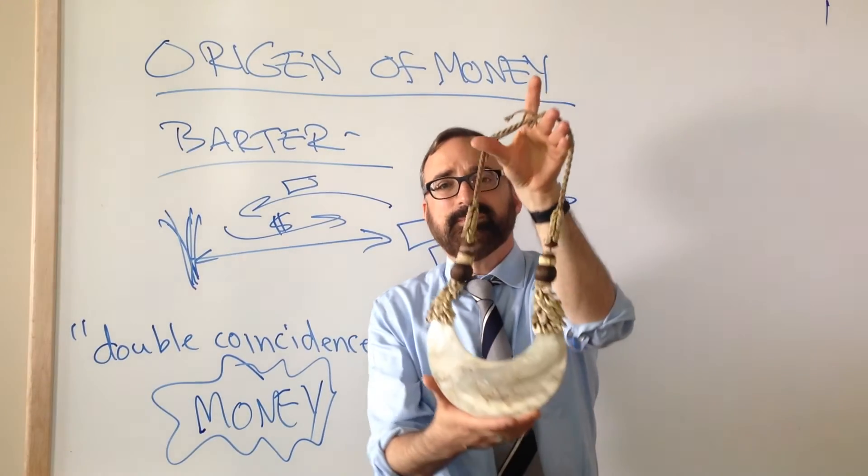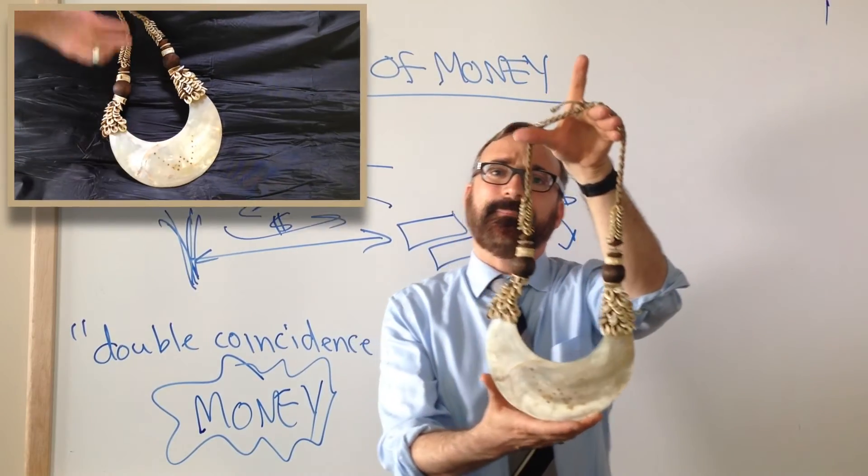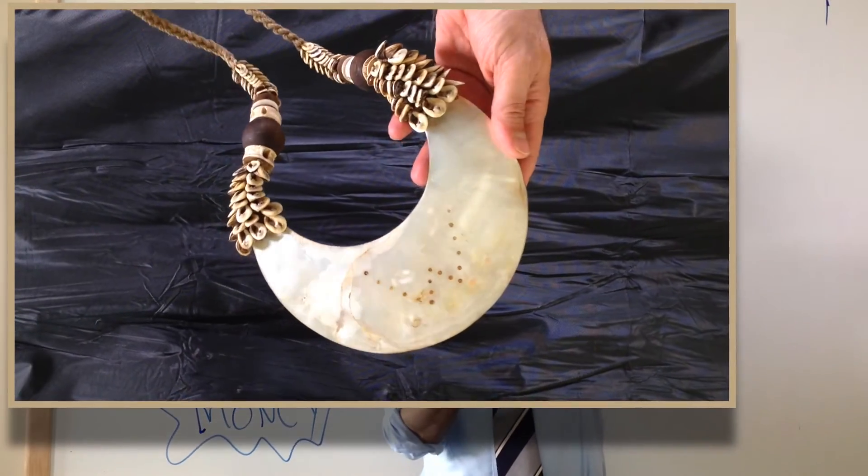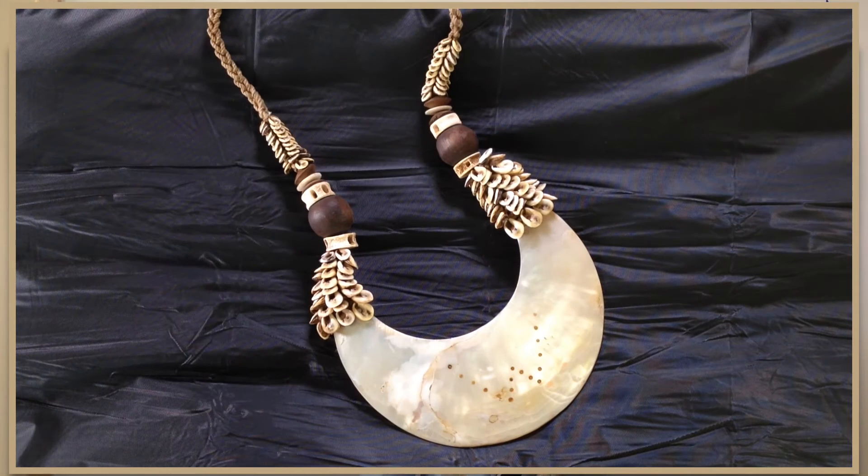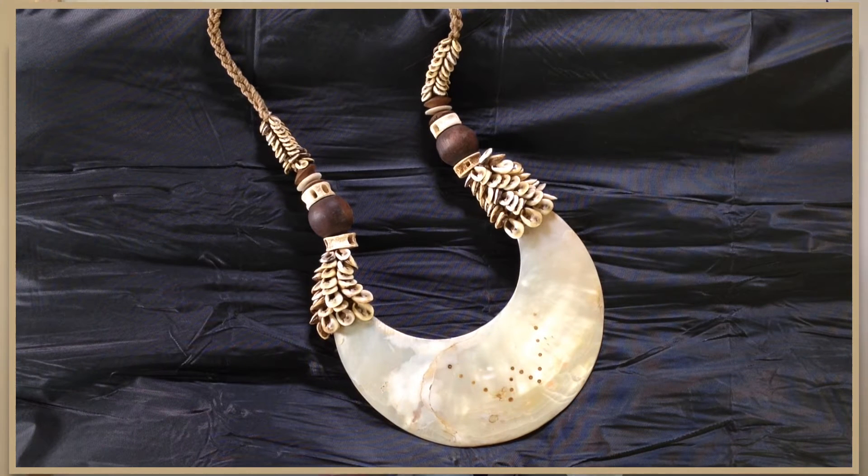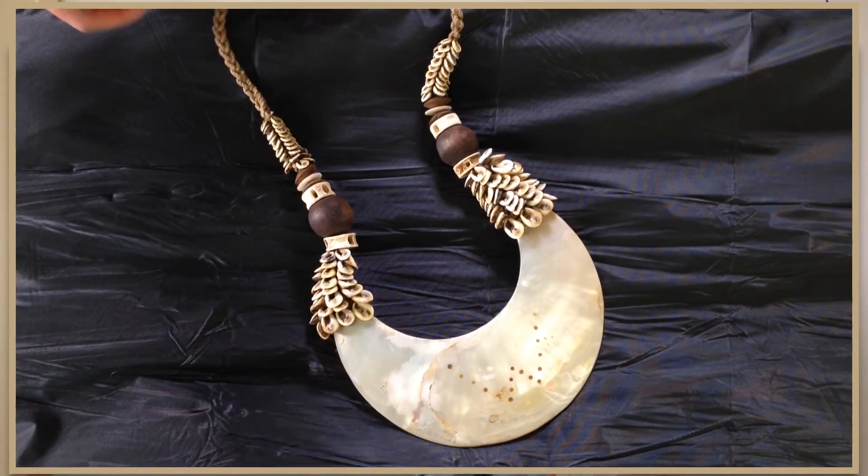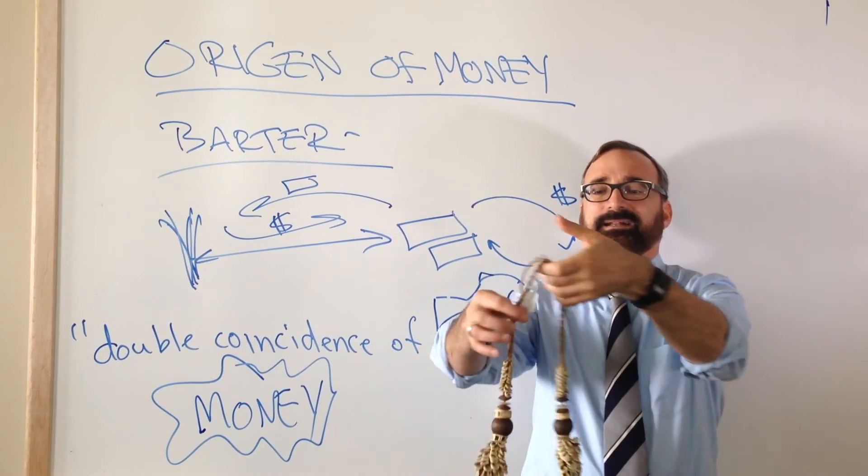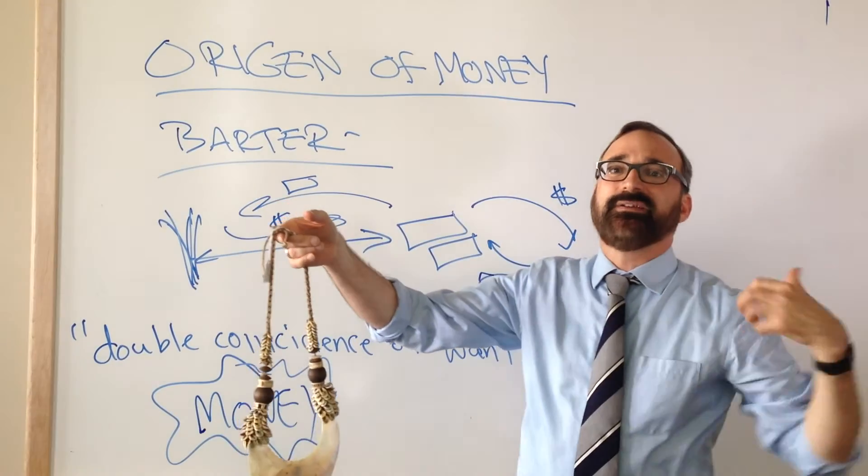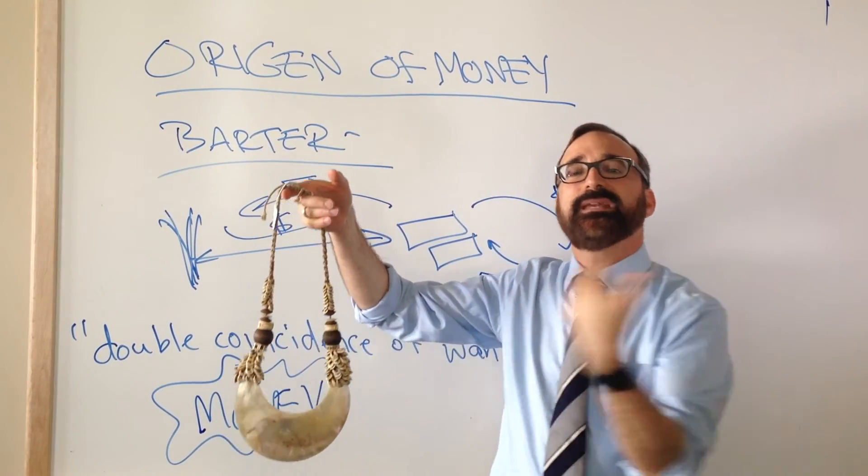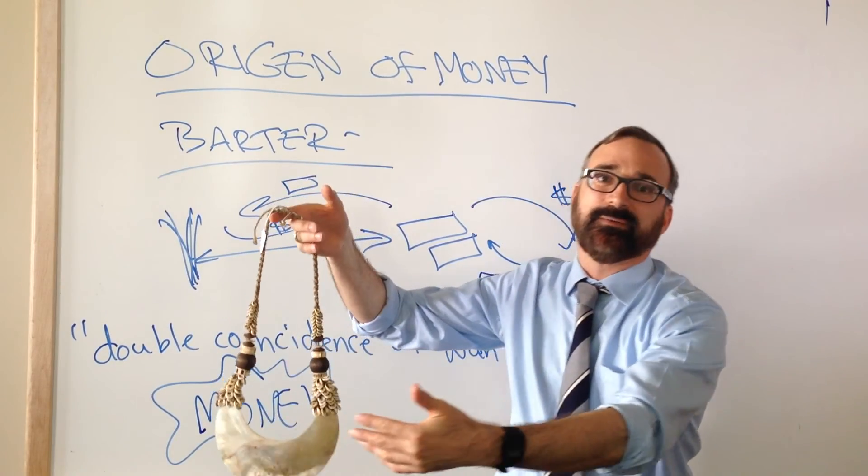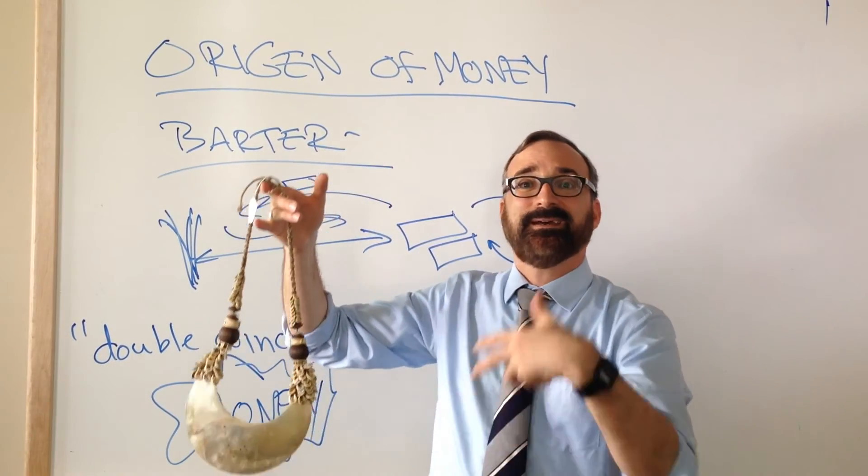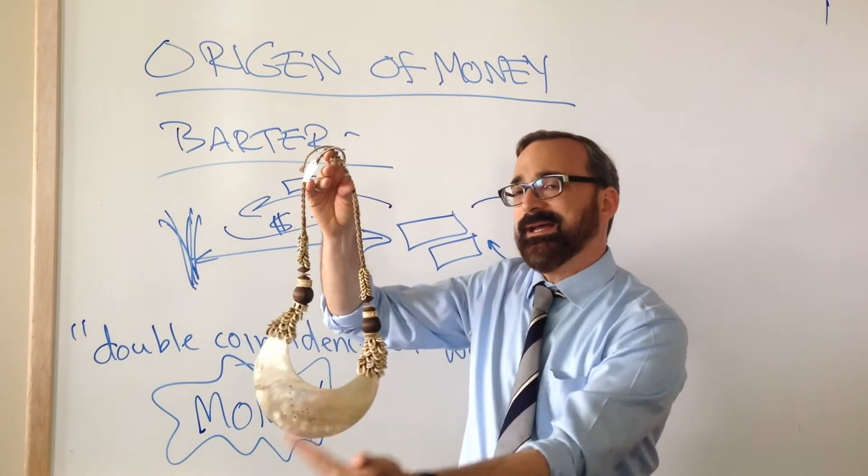And what this would be used for would be when families get together to arrange marriages, there would be the presentation of these sorts of objects basically to seal the deal. Now you might think that's not really money. Well what it does basically is create relationships of exchange between families. It says by putting this on the bride, the bride's family and the groom's family are now connected and there's going to be exchanges between those families into the foreseeable future. There's going to be exchanges of love and labor, but also things like pigs in the highlands of New Guinea, food crops, fish and so forth, in a kind of generalized reciprocity, a kind of generalized sharing, all symbolized by this thing.